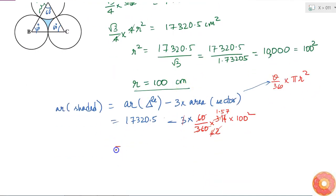So, this comes out as 17320.5 minus 1.57 into 100 square, so 1.57 into 100 into 100. This is equal to 17320.5 minus 15700. Please be careful with how many zeros you are keeping. This will be 15700. So, if I subtract it, I will get it as 1620.5 centimeters square. This is the area of this shaded region.